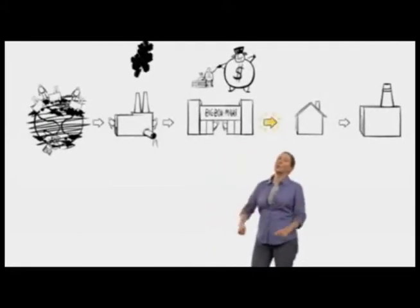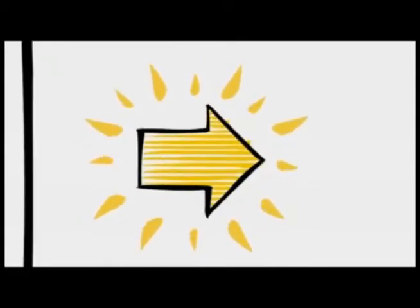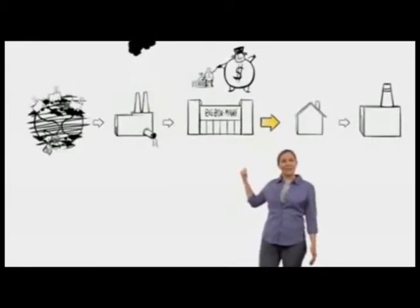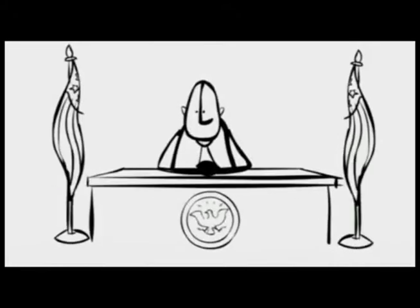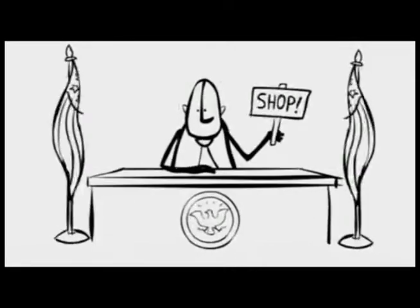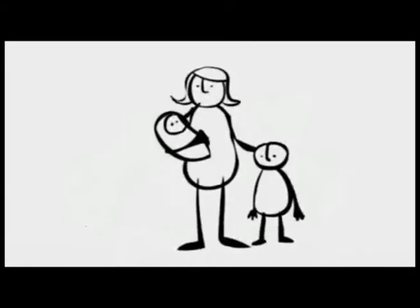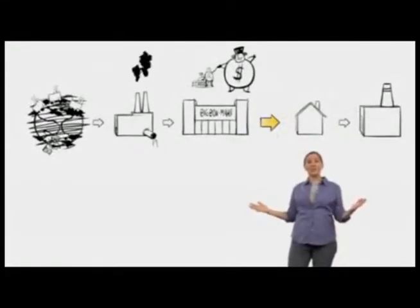And that brings us to the golden arrow of consumption. This is the heart of the system, the engine that drives it. It is so important that protecting this arrow has become the top priority for both of these guys. That's why after 9-11, when our country was in shock and President Bush could have suggested any number of appropriate things, to grieve, to pray, to hope. No, he said to shop, to shop. We have become a nation of consumers. Our primary identity has become that of being consumers, not mothers, teachers, farmers, but consumers. The primary way that our value is measured and demonstrated is by how much we contribute to this arrow, how much we consume.